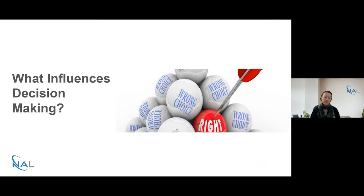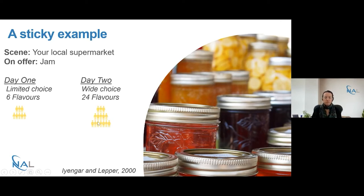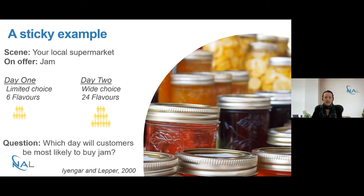How does this play out in the choice of devices itself? Let's use a sticky example. The scene is your local supermarket with a big display of jam. On day one, marketers set up six flavours and get a bit of interest. On day two, they put out a lot more flavours, and as you might expect, even more crowds flock to sample. So, given these two scenarios, which day will customers be most likely to buy jam? What researchers found was that actually on the days with more limited flavours, jam sales were much higher than on the days with lots and lots of choice.